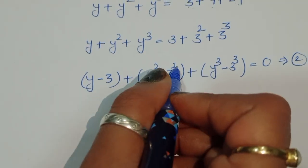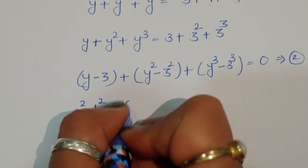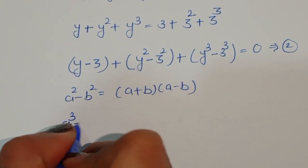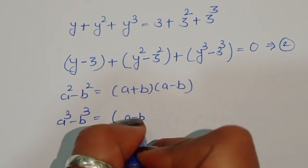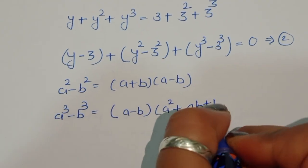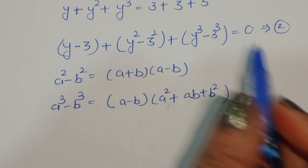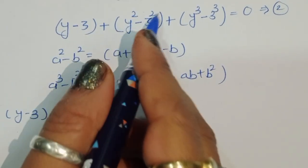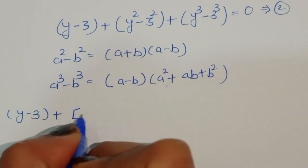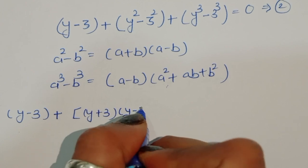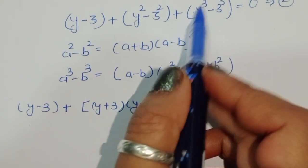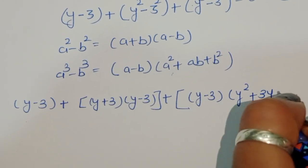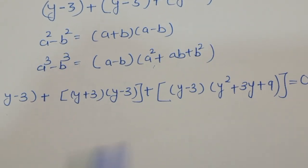Now we know the formula: a square minus b square equals (a plus b)(a minus b). And here for y cube minus 3 cube, we use the formula a cube minus b cube equals (a minus b)(a square plus ab plus b square). We apply these two formulas. So y square minus 3 square becomes (y minus 3)(y plus 3), and y cube minus 3 cube becomes (y minus 3)(y square plus 3y plus 9).